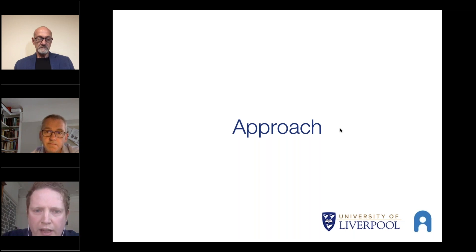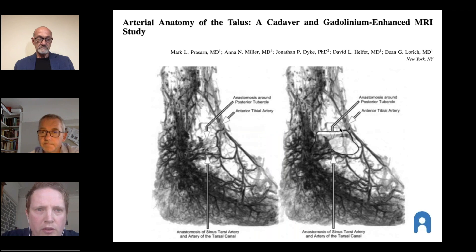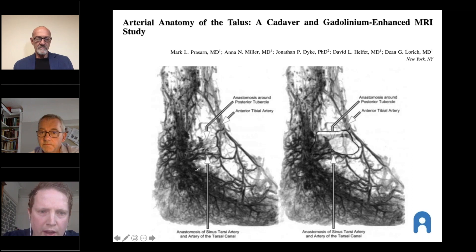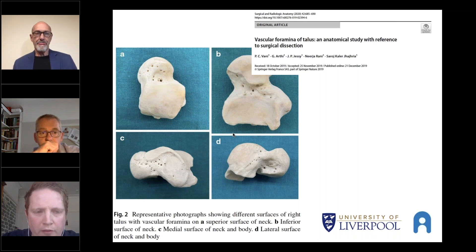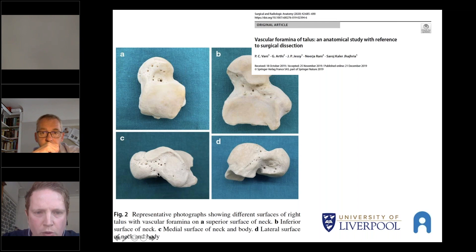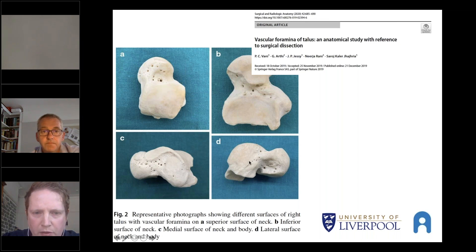I'll address this by a number of factors, and first of all the approach. The arterial anatomy of the talus has been known for quite some time. Prisson's very good work showed a huge amount of blood supply on the medial side of the talus and relatively little on the lateral side. A paper by Varney this year also showed the foramina of the vascular input into the talus — on the medial side, not only around where the delta inserts but all the way down, you have small and large foramina going underneath the talar neck, and on the lateral side apart from the ATFL insertion there is very little apart from inferiorly.